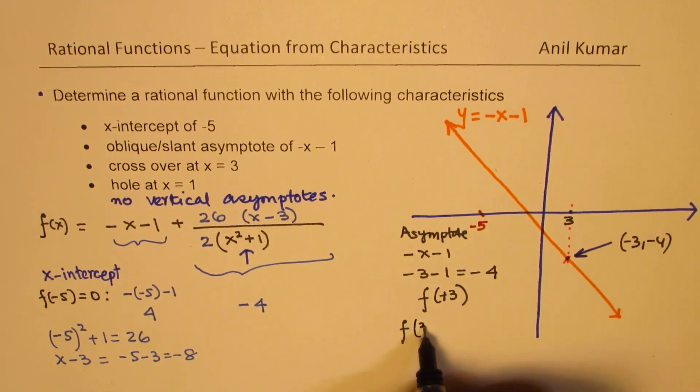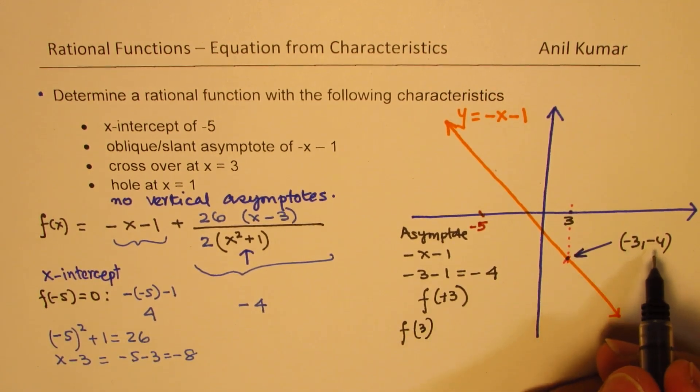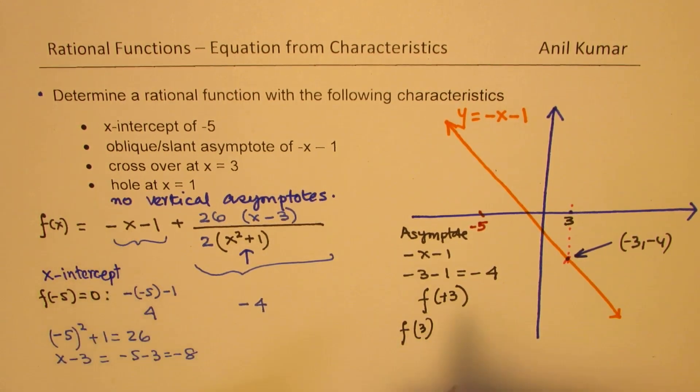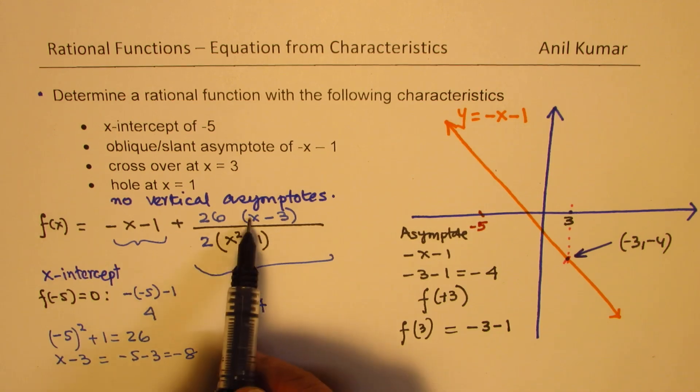So the function value at 3 should be minus 4. That is what we are trying to achieve now. So let's substitute here the value 3. So if I substitute 3, I get minus 3 minus 1, which is minus 4. So basically at 3, that should be 0. Do you get my point?